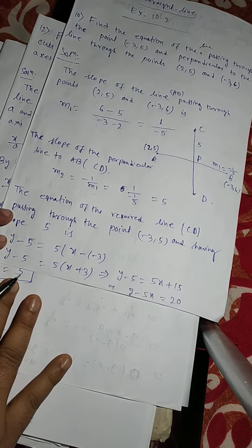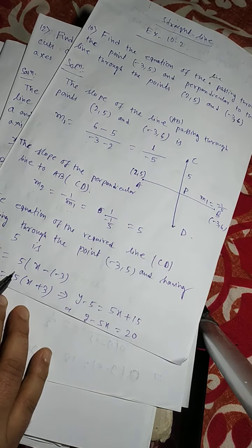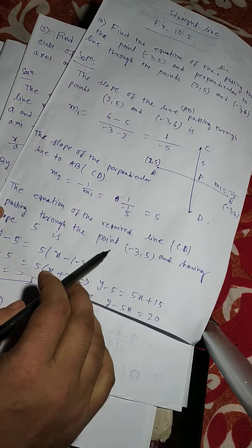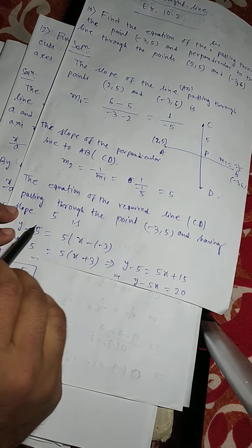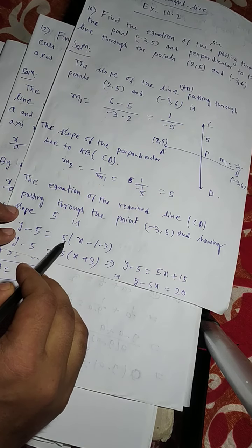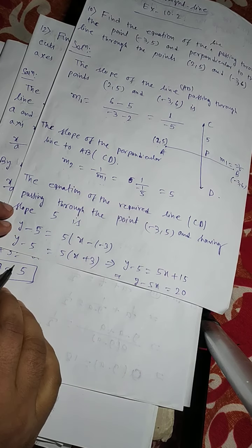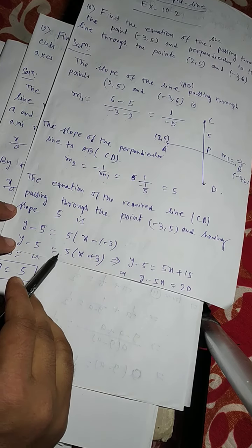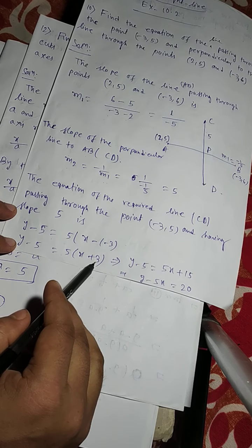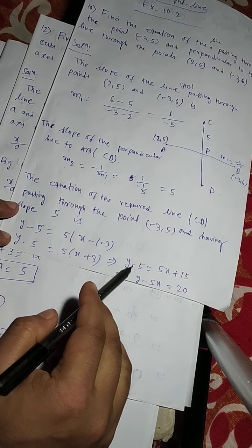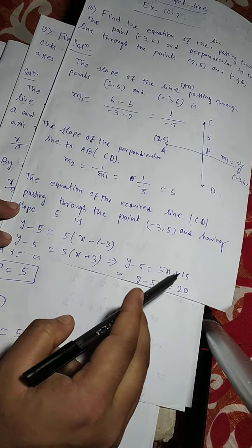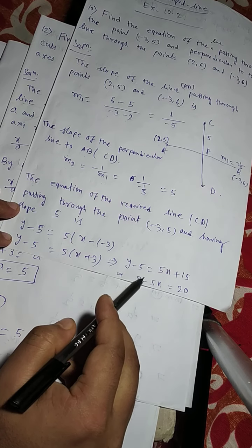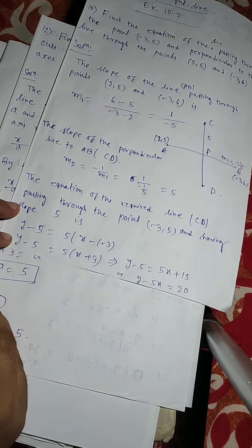So the equation of the required line CD passing through the point (-3, 5) and having slope 5 is: Y minus Y1 equals M into X minus X1. So Y minus 5 equals 5 into X plus 3, that means Y minus 5 equals 5X plus 15. So Y minus 5 minus 5X equals 20.